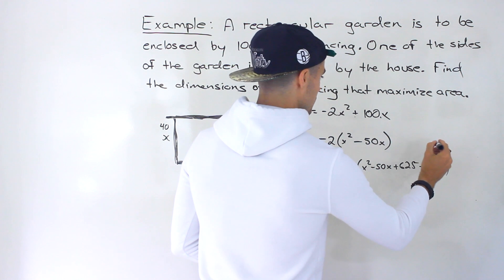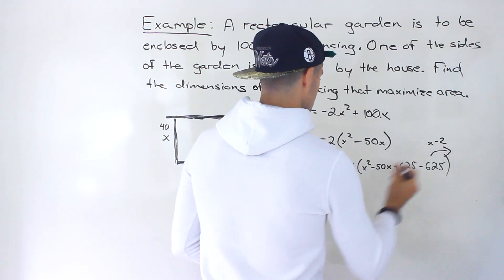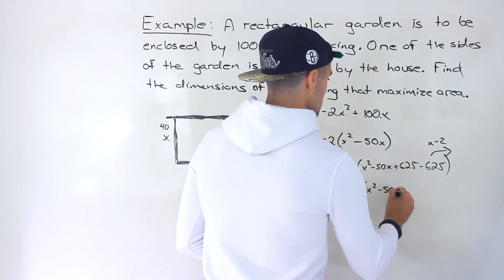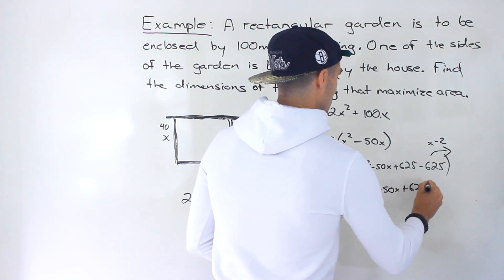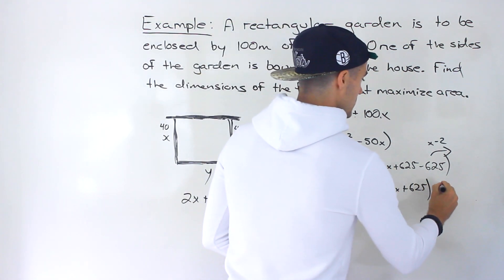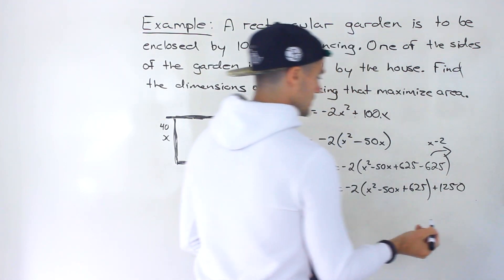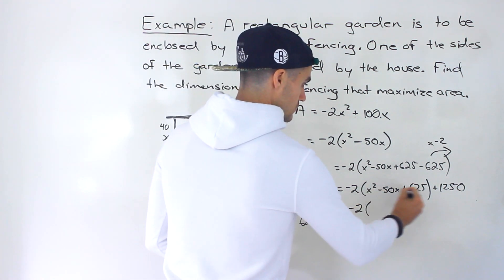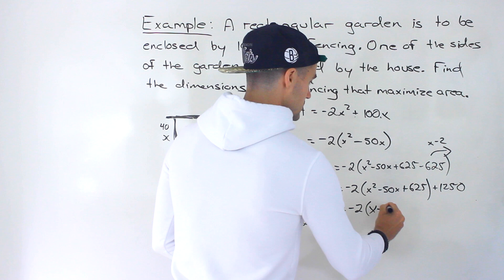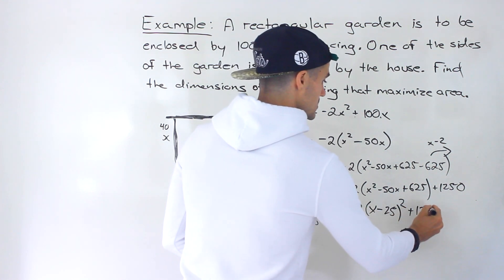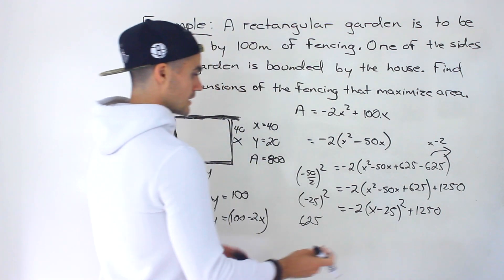And then we take out the negative 625. Multiply it by negative 2. X squared minus 50X plus 625. And then negative 625 times 2 would give us positive 1250. And then this here is going to be a perfect square trinomial. It's going to factor into X minus 25. That's going to be squared. Then we're going to get plus 1250 like that.